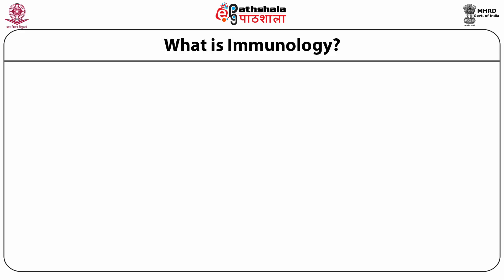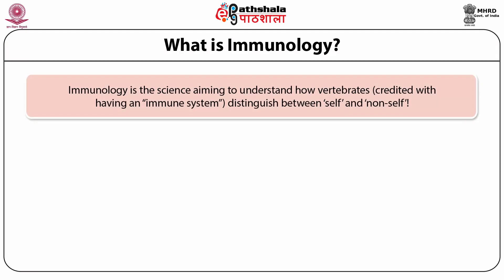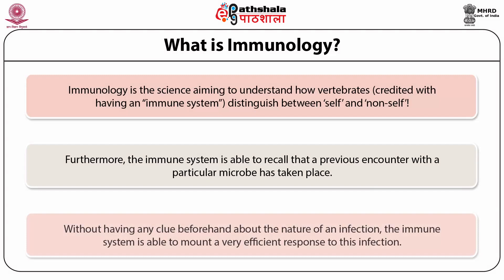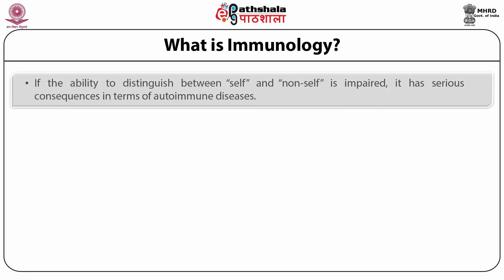What is Immunology? Immunology is the science aiming to understand how vertebrates, which are credited with having an immune system, distinguish between self and non-self. Furthermore, the immune system is able to recall that a previous encounter with a particular pathogen has taken place. Without having any clue beforehand about the nature of an infection, the immune system is able to mount a very efficient response. If this ability to distinguish between self and non-self is impaired, it results in what are called autoimmune diseases.